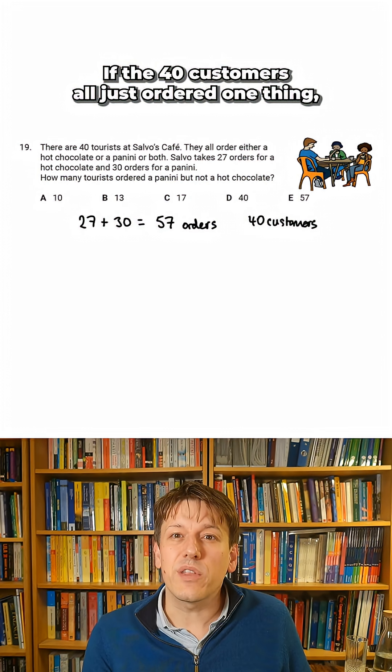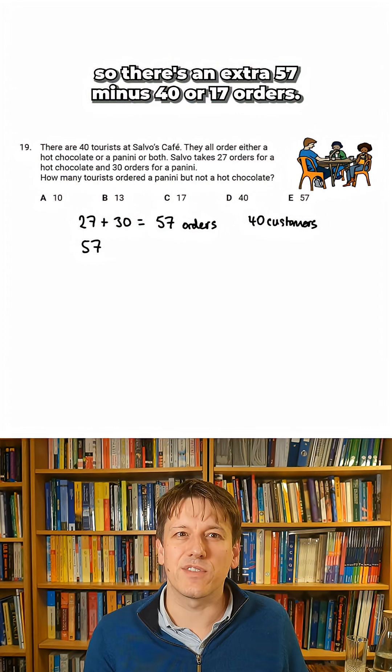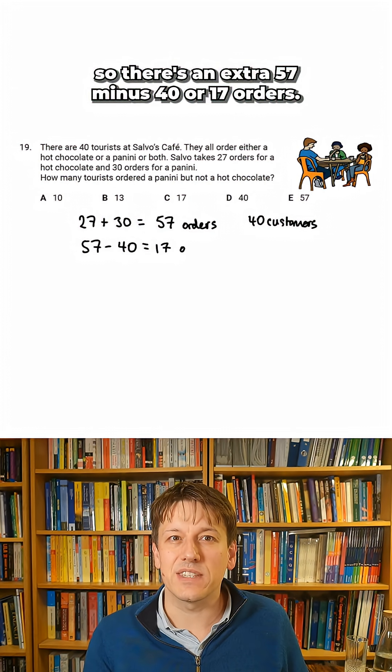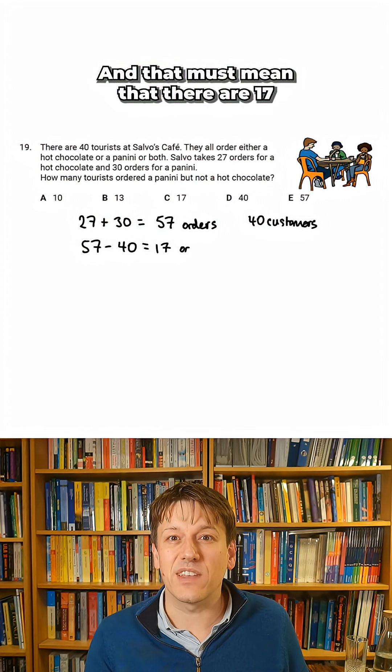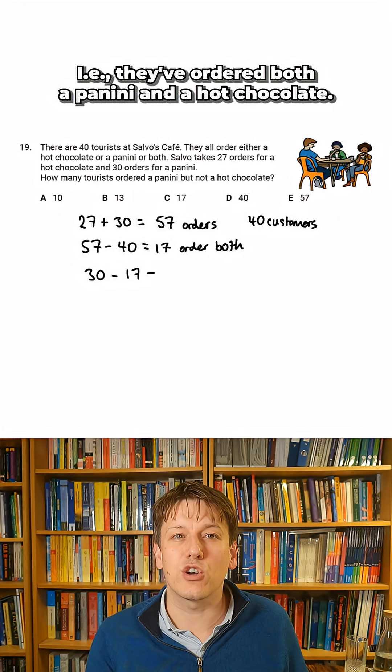If the 40 customers all just ordered one thing there would be 40 orders but we've got 57 orders so there's an extra 57 minus 40 or 17 orders and that must mean that there are 17 people who've ordered two things. They've ordered both a panini and a hot chocolate.